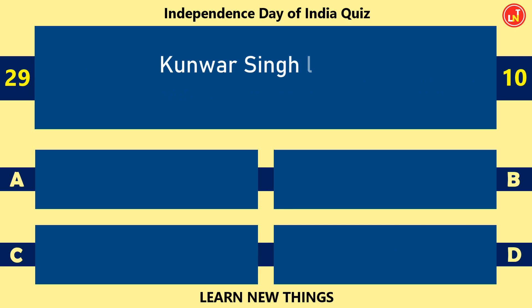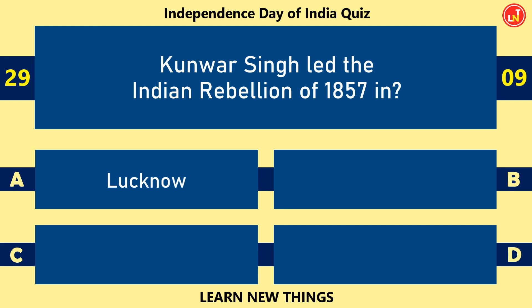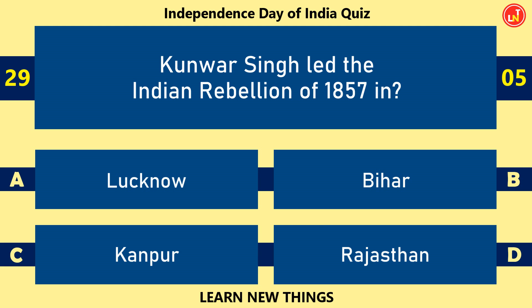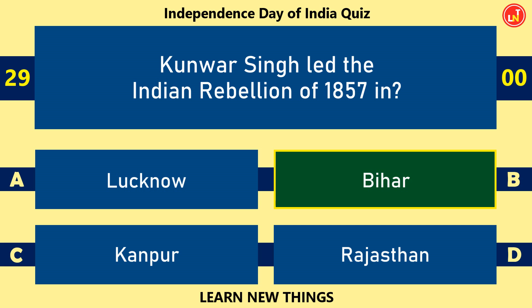Kunwar Singh led the Indian Rebellion of 1857 in — Bihar.